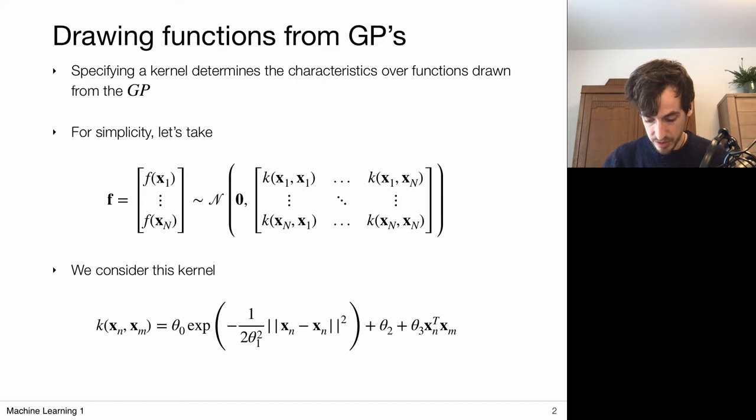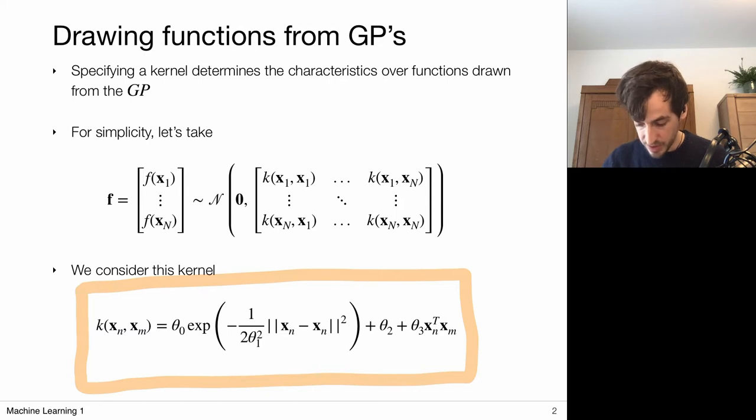In this video we're going to consider the following kernel. This kernel consists of this exponential part and this part which I'm going to say is the linear part. Later it will become clear why we can call this the linear part—essentially because it's linear with respect to only one of these variables.